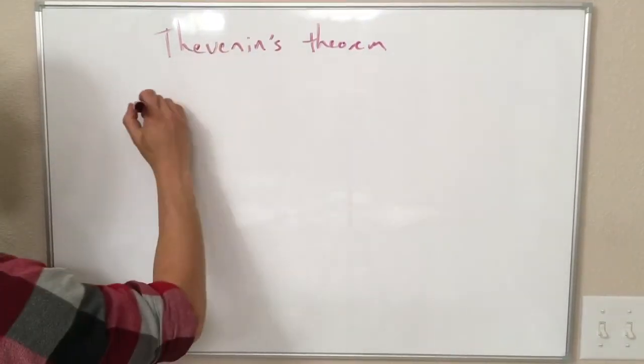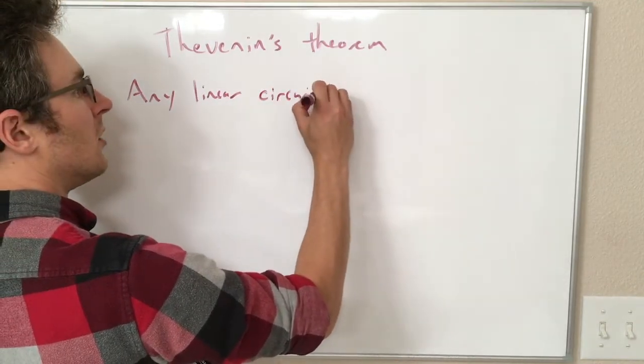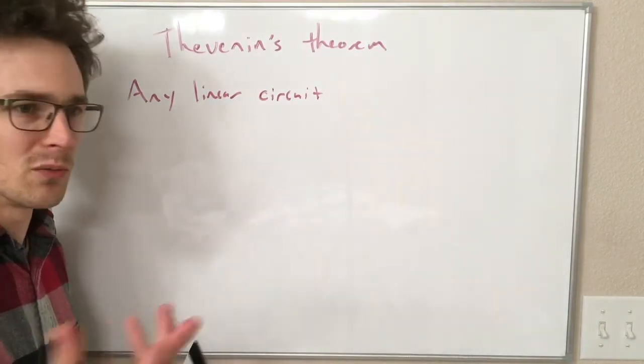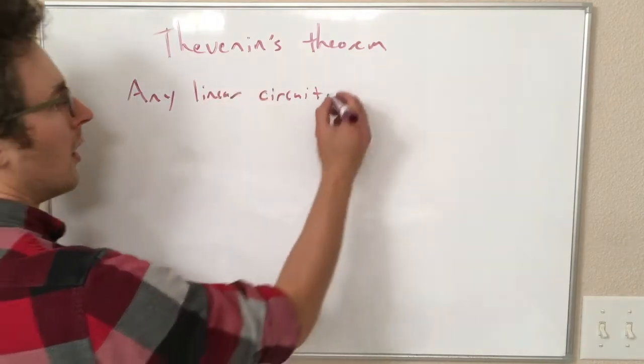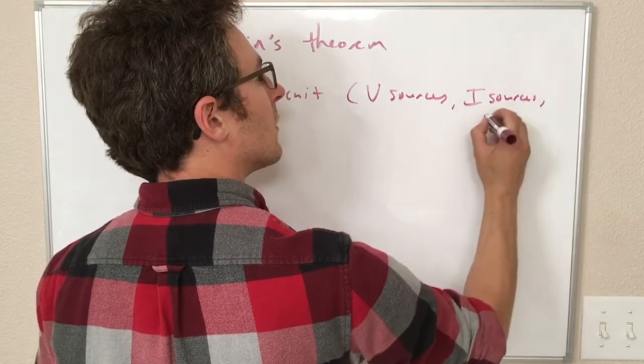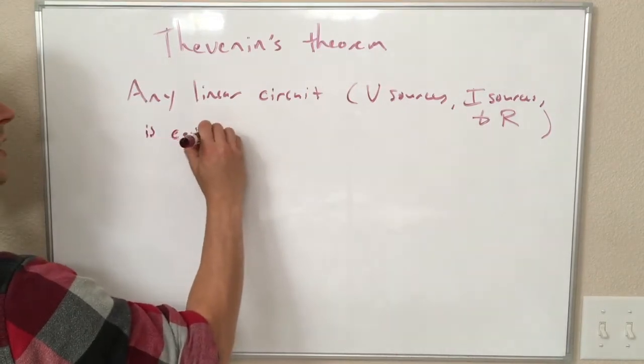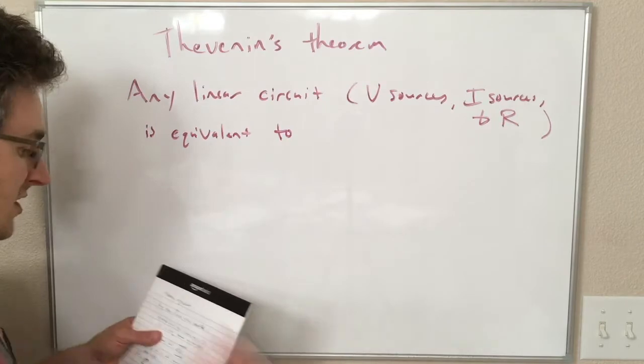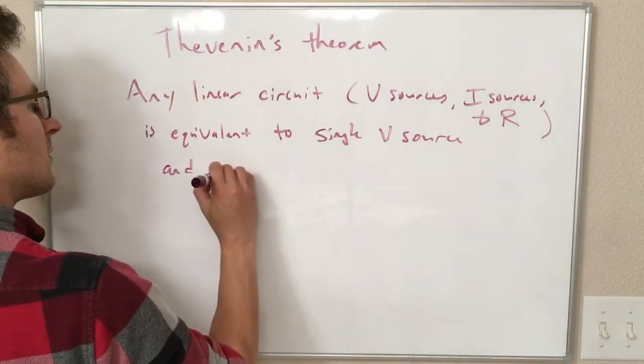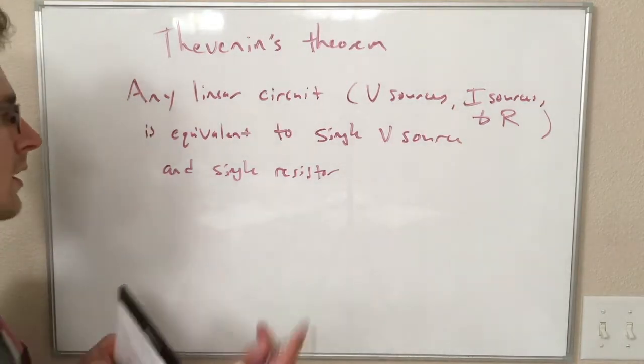So Thevenin's theorem states the following. Any linear circuit, which for us means it's made of voltage sources, current sources, and resistors, so pretty much everything we've learned about, is equivalent to a single voltage source and a single resistor when measured between any two points.